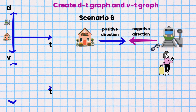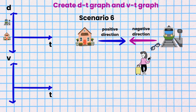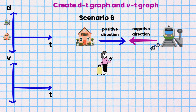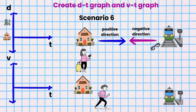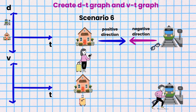Scenario 6. Mole walks from the train station to her home at a small constant velocity. Suddenly she realizes she dropped her eyeglasses near the train station. She abruptly turns around and runs to the train station at a constant velocity.